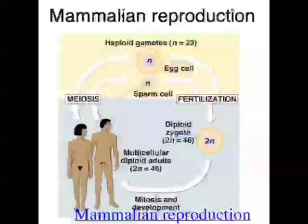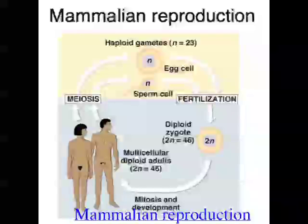Meiosis happens in a great many organisms, and if we look at mammalian reproduction, gamete formation or meiosis is the first step. The male sex cell, the sperm, is produced in the primary sex organ of the male reproductive system, which is the testes. The female sex cell, or the egg, is produced in the primary sex organ of the female reproductive system, which is the ovaries. The next step after gametes are formed is sex has to happen - the sperm fuses with the egg, and that's fertilization.